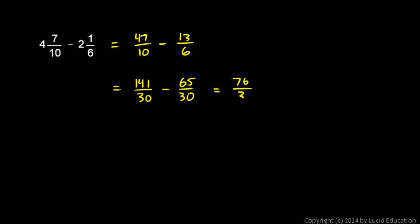And 76 and 30 are both even numbers so I can reduce this fraction. That's 38 over 15. And I can write that as a mixed number. 38 over 15 is the same as 2 and 8 fifteenths.